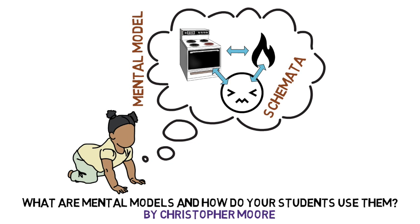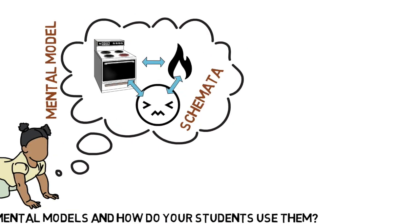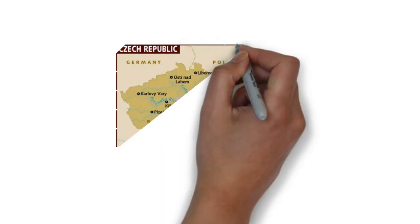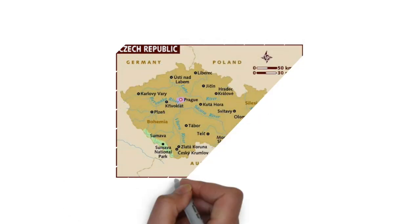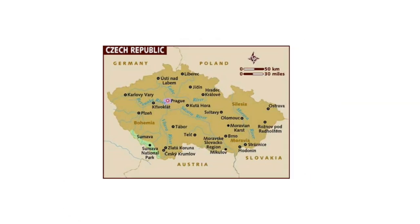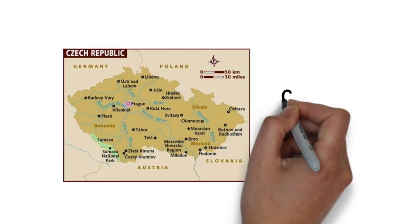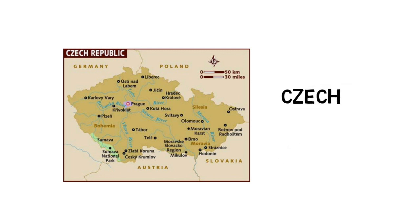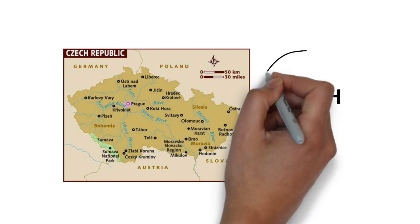We don't learn anything by simply being told. That's one reason the traditional model for education doesn't work well. Let me give you another example of cognitive model building that you as an adult can relate to.